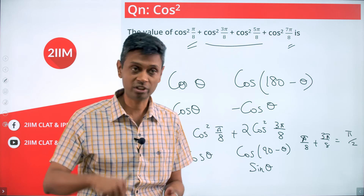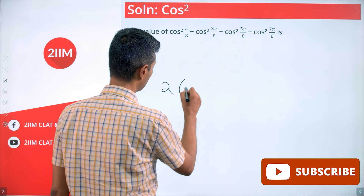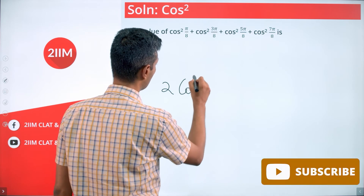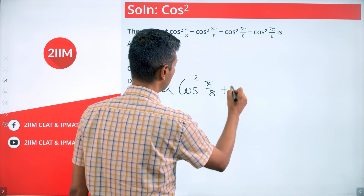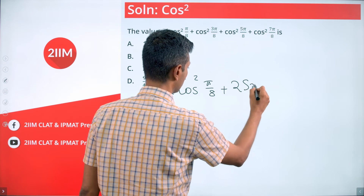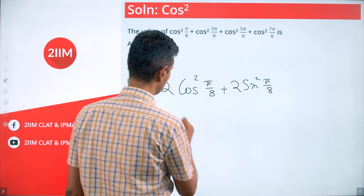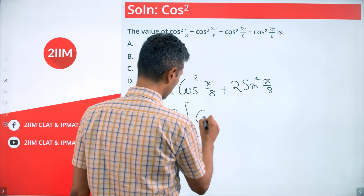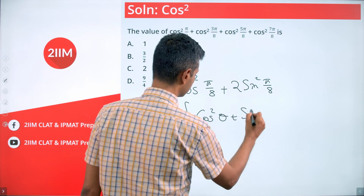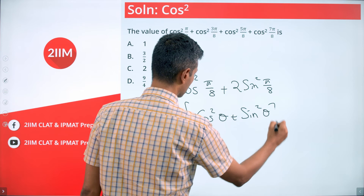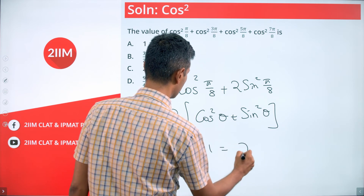The expression becomes 2·cos²(π/8) + 2·sin²(π/8), which is 2·(cos²(π/8) + sin²(π/8)) = 2·1 = 2.